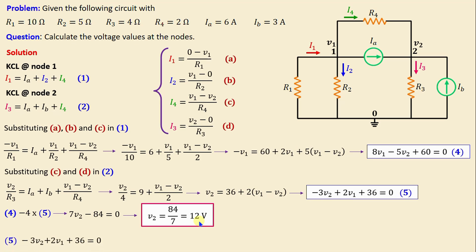Let's move on. From equation (5), we have: -3V2 + 2V1 + 36 = 0. If we replace V2 here by 12 volts, we get: -36 + 2V1 + 36 = 0. That means V1 = 0 volts.